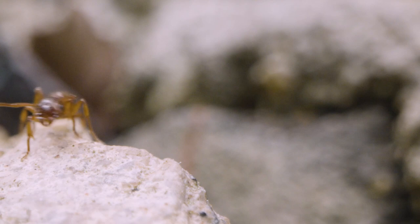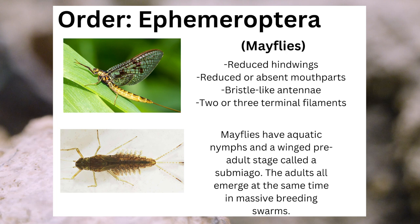The orders that emerged around this time include the order Ephemeroptera, containing the insects known as mayflies. They can be identified through their reduced hindwings, their reduced mouthparts, their bristle-like antennae, and their two or three short terminal filaments. Mayflies have aquatic nymphs and a winged pre-adult stage called a subimago. The adults all emerge at the same time in massive breeding swarms.